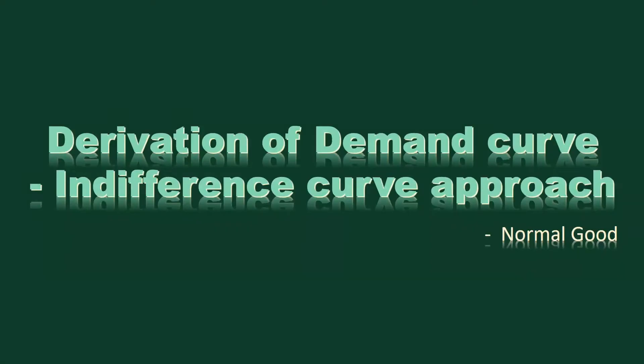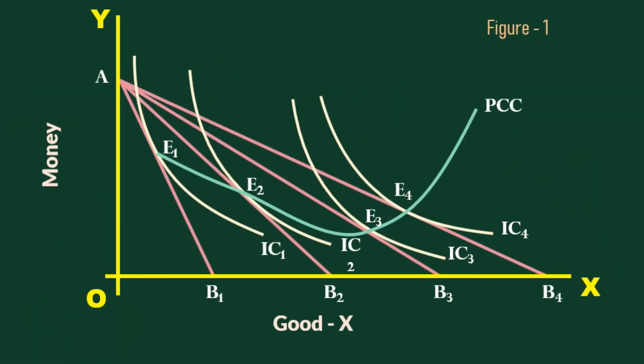Now the lesson. Look at this graph, Figure 1. Income of the consumer remaining constant, the price consumption curve is derived by joining the points of equilibrium at different price levels of Good X.